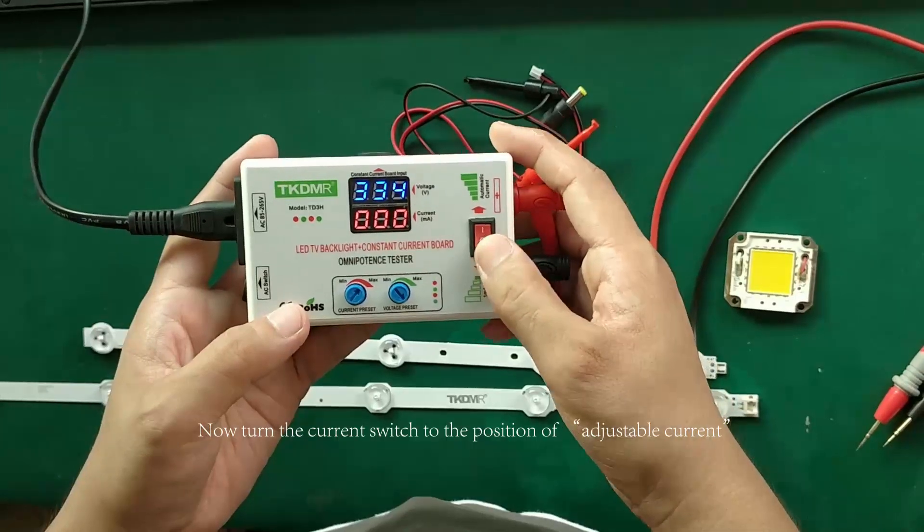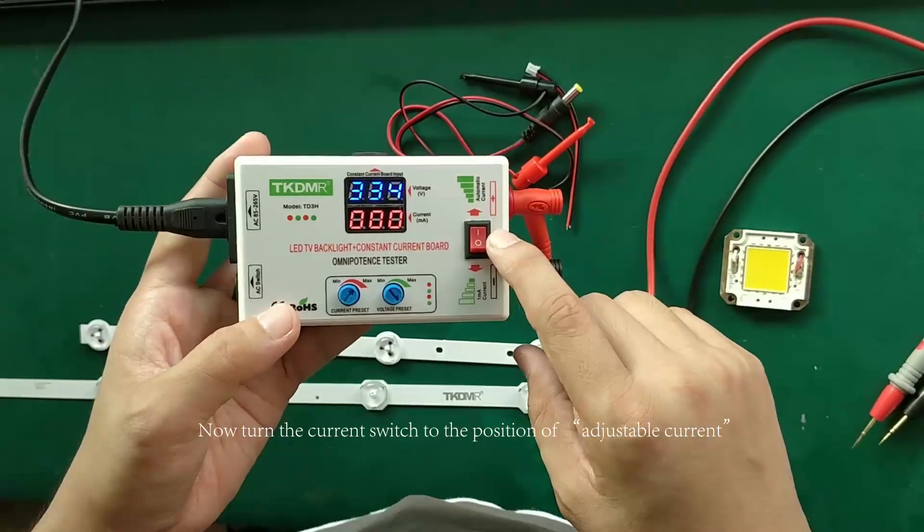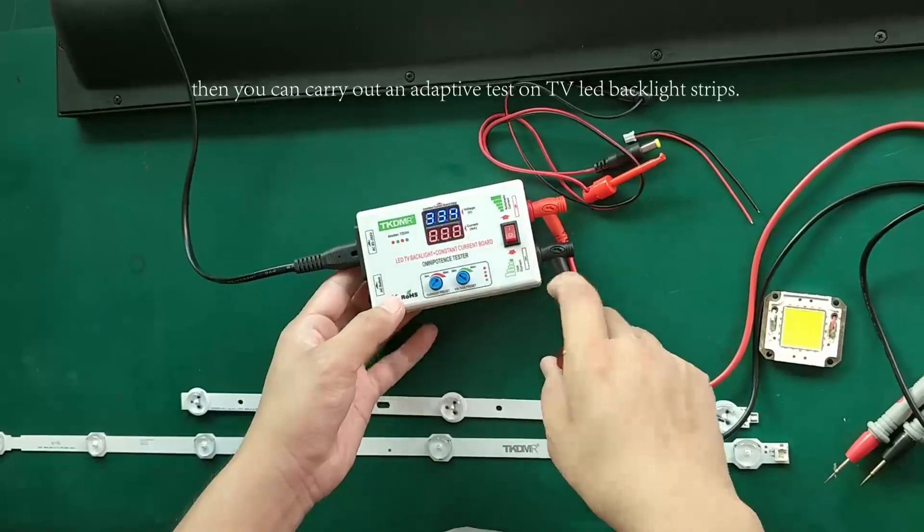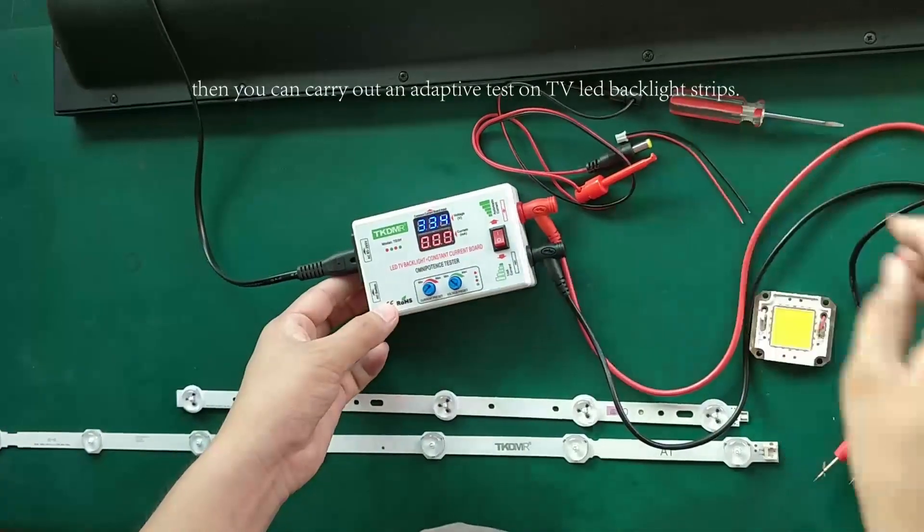Now turn the current switch to the position of adjustable current. Then you can carry out an adaptive test on TV LED backlight strip.